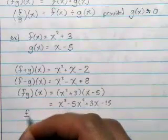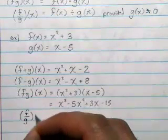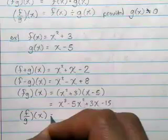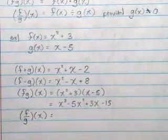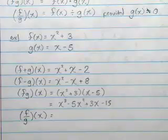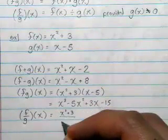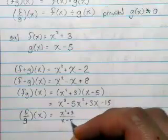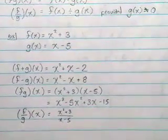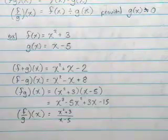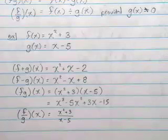And then f over g of x — making the formula is pretty straightforward. Just like the last one, we're just going to put f of x over g of x. So x squared plus 3 over x minus 5 would be the formula. One thing they're going to have you doing with all of these is double-checking the domain. Does the domain stay the same or does it change?